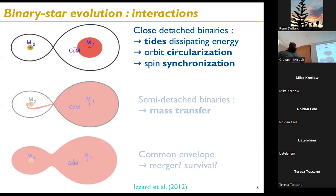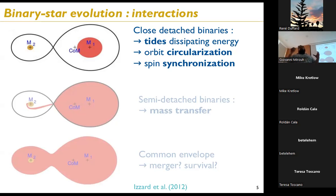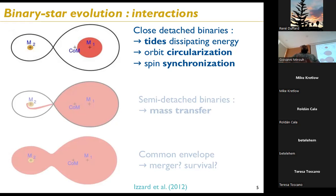The other interactions include mass transfer, when one star climbs the red giant branch and material becomes gravitationally attracted to the companion, and common envelope phases, where both stars are surrounded by a shared envelope. Key questions are whether stars merge or survive, and how much mass is ejected. The focus today, however, is on tides.